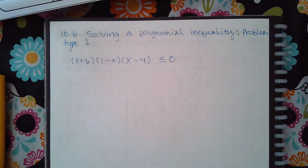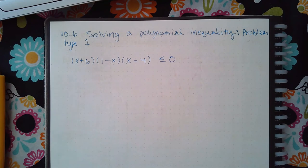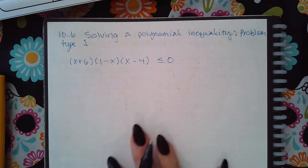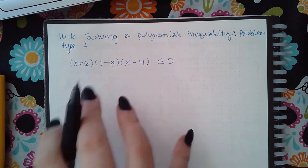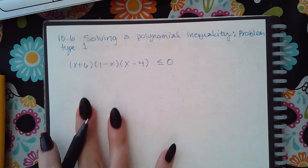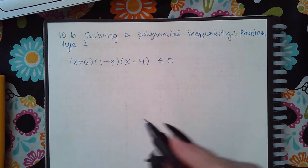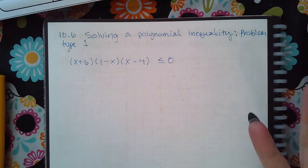Now here we have 10.6 solving a polynomial inequality problem type 1, so we do have to do a testing method with this problem. The first thing we're going to do is try to figure out what the intervals are for the testing.